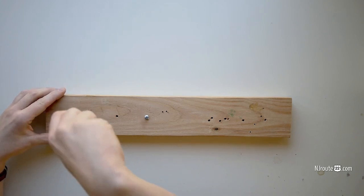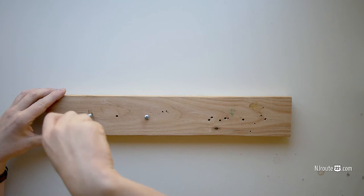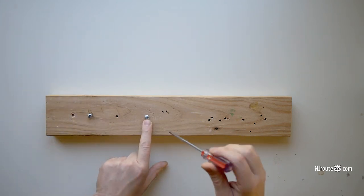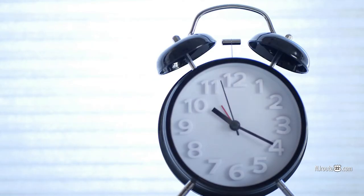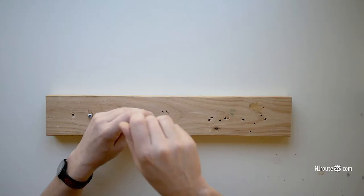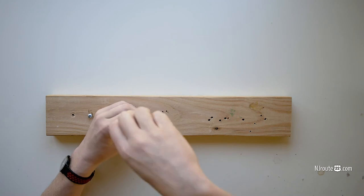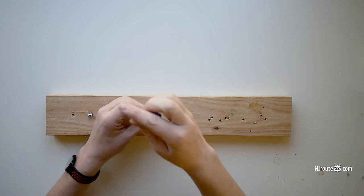It goes in, and to unscrew it, you turn it counterclockwise. See, now counter might be hard to understand for a lot of people. So the big word for doing it the opposite way is anti. So call it anti-clockwise. Anti-clockwise, you turn it the other way, and it'll come right out.